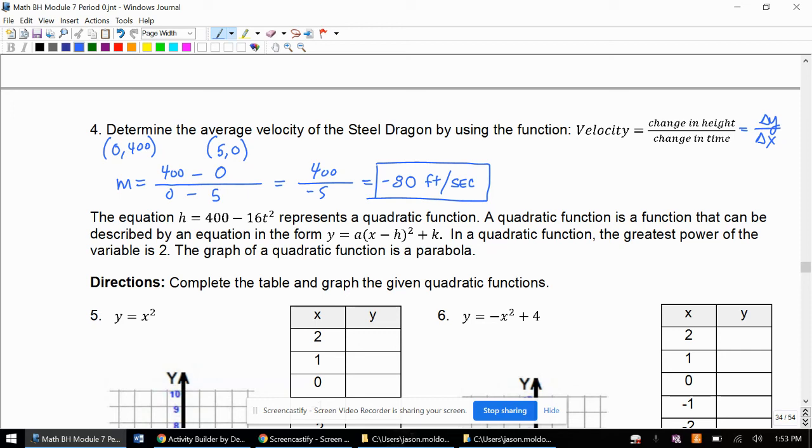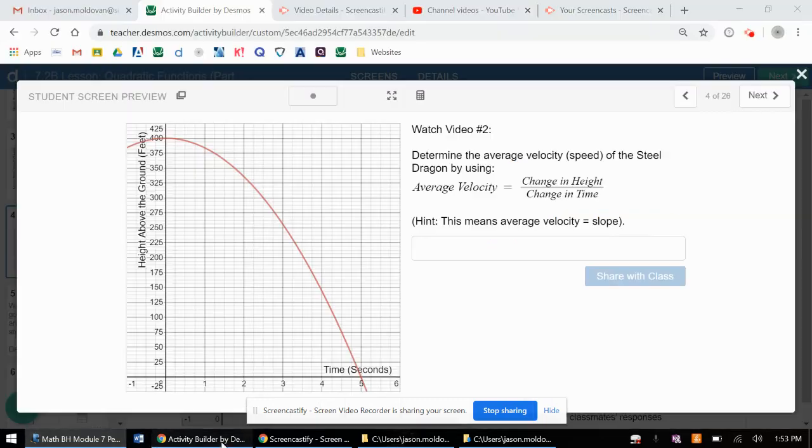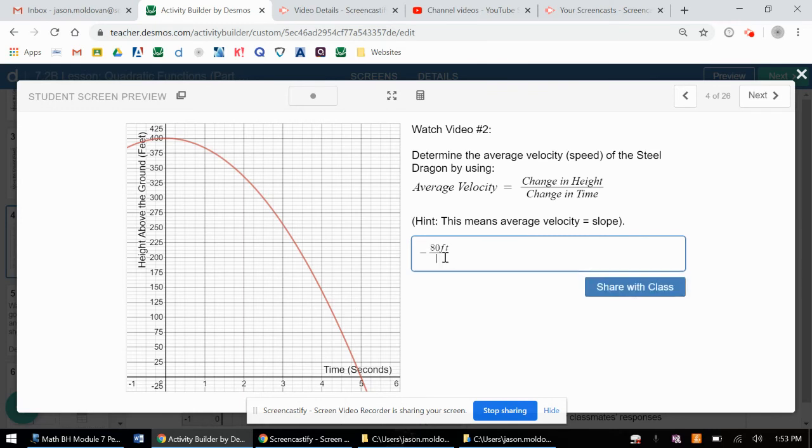And we'll include that in this spot. And there we go. So average speed over time zero to time five.